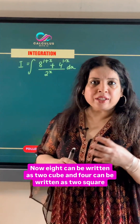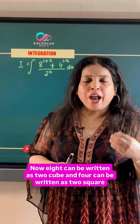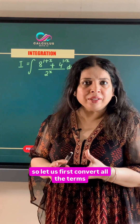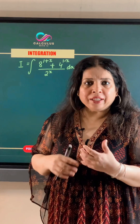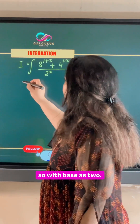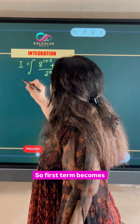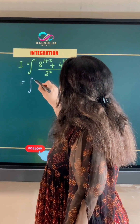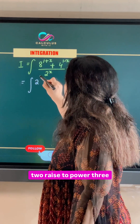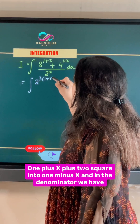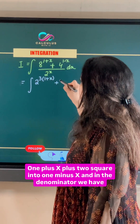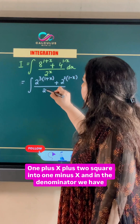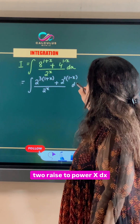Now, 8 can be written as 2 cubed and 4 can be written as 2 squared. So let us first convert all the terms with base 2. The first term becomes 2 raised to power 3 times (1 plus x), plus 2 squared times (1 minus x). And in the denominator, we have 2 raised to power x dx.